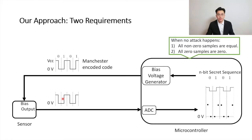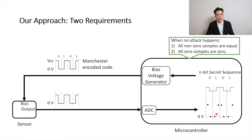The ADC digitizes the sensor output in each clock cycle into two samples. One sample is obtained when the sensor is biased at the high voltage, and it has a non-zero value — we call this the non-zero sample. The other sample is obtained when the sensor is off and has a value of 0V — we call this the zero sample. When no attack happens, the digitized sensor output satisfies two requirements: first, all non-zero samples are equal; second, all zero samples are zero. If an attacker violates any one of these two requirements, she will be detected immediately.